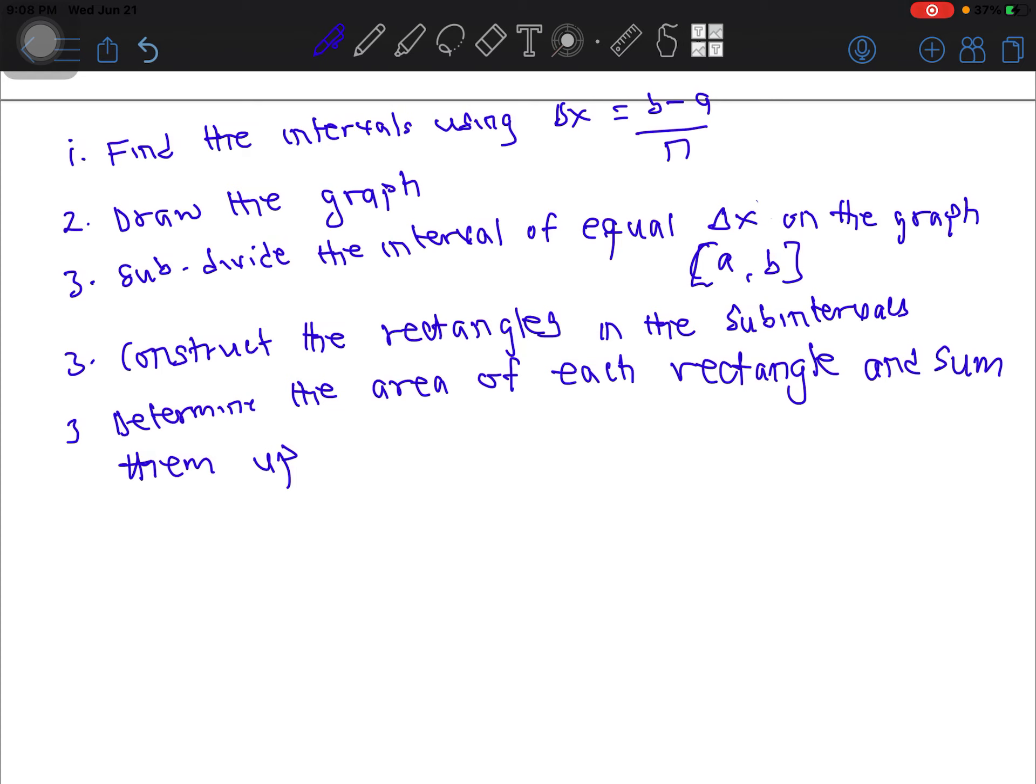First of all, you need to find the interval using this formula: Δx = (b - a)/n, where b and a are the endpoints, the extreme endpoints, which is the last ordinate and the first ordinate.